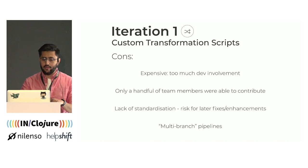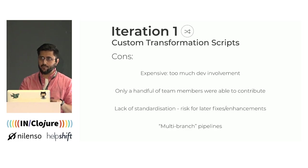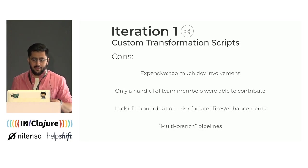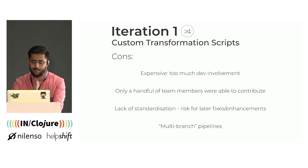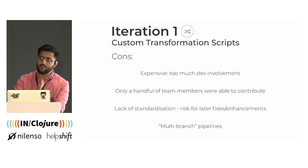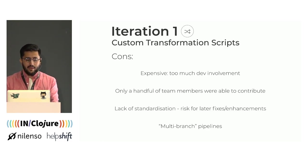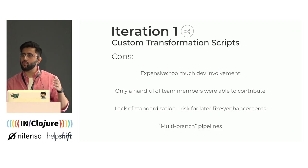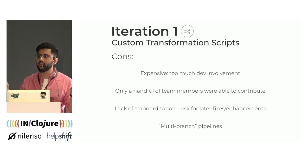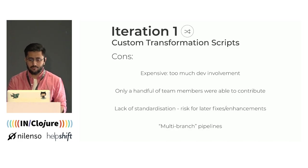Despite some of the merits of this approach, it still had a few issues. For one, it was expensive — it required hand coding every part of the transformation, and hence required a bit too much hands-on involvement of developers throughout the customer onboarding process. And given Clojure familiarity was low in the team, there were only a few of us who could help. Also, each of us were writing these scripts in our own separate ways, so there wasn't enough standardization — a risk if we ever needed to revisit these scripts. We also found that a single linear pipeline wasn't quite cutting it, and we were composing multiple pipelines in ad hoc imperative ways, which compromised readability.